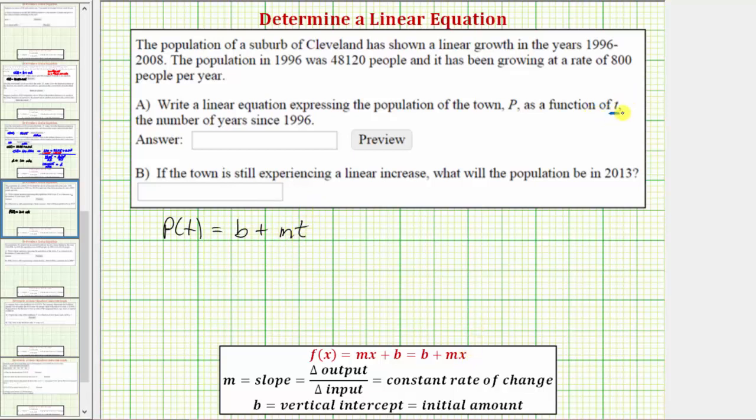And here, because t is the number of years since 1996, the population of 1996 is the initial or starting amount, which gives us the vertical intercept b. So in this problem, because the population of 1996 is 48,120, we know that b equals 48,120 people.